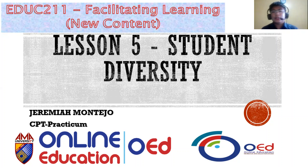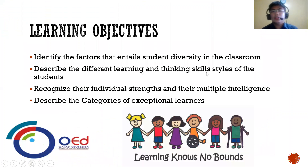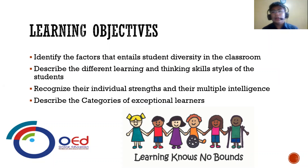Before we discuss this topic, we are going to mention our learning objectives. The first is to identify the factors that entail student diversity in the classroom. The second is to describe the different learning and thinking styles of students. Third is to recognize their individual strengths and multiple intelligences. And lastly, to describe the categories of exceptional learners.